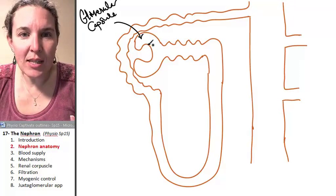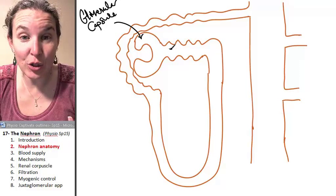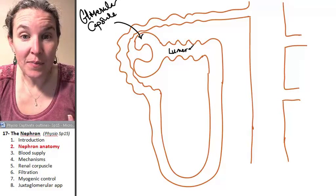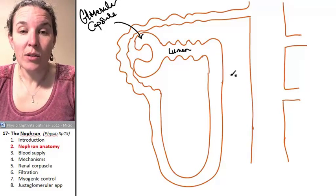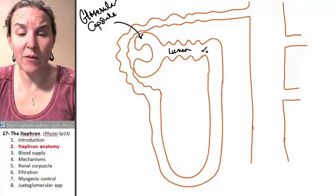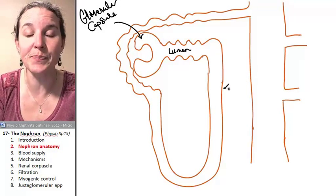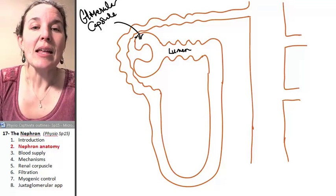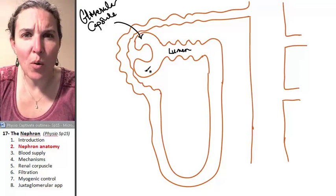When you cross this single layer of cells right here, you're going to be inside a lumen. And the lumen is where we're going to collect filtrate, but it's basically pre-pee. It's the fluid that we filter out of the blood in order to make our urine.